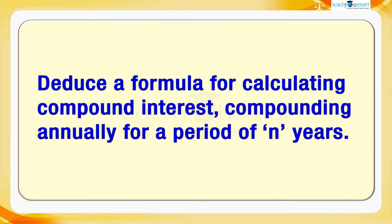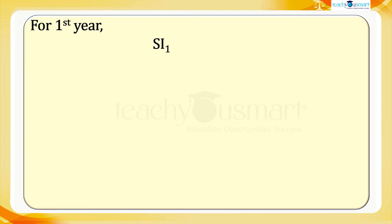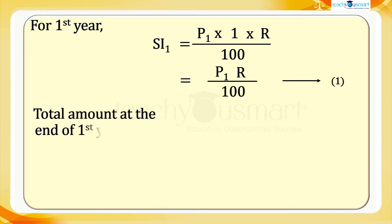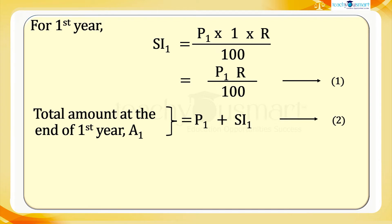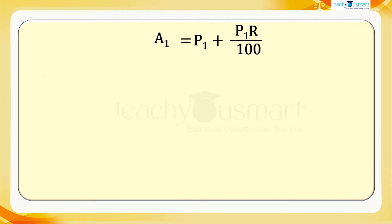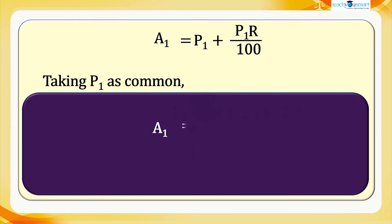For the first year, the simple interest SI₁ equals P₁ × 1 × r divided by 100, which equals P₁r divided by 100 — this is equation 1. The total amount at the end of the first year, A₁, equals P₁ plus SI₁ (equation 2). Substituting equation 1 into equation 2, A₁ equals P₁ plus P₁r divided by 100. Taking P₁ as common, A₁ equals P₁ multiplied by (1 + r/100). This is the amount at the end of one year.